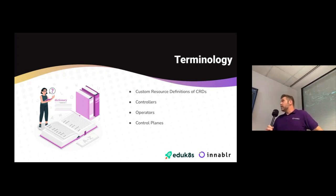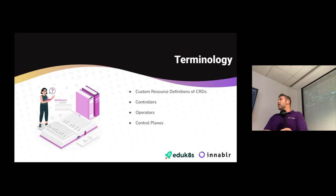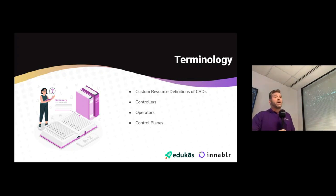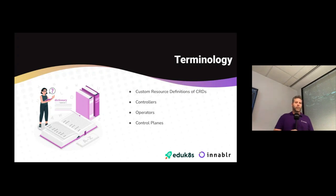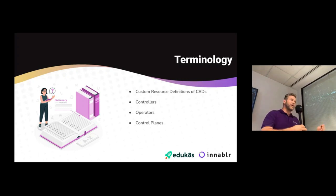An operator is essentially the combination of CRDs and a controller — it's an application running in Kubernetes that helps you do various tasks. An operator can be anything from something that installs an application, to configuring something, to event-driven workflows. Finally, a control plane is a bunch of tools and programs that help you monitor and manage an application — essentially a workhorse for adding and managing things.